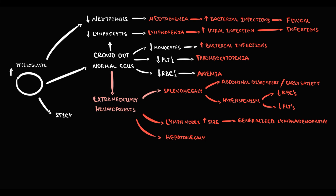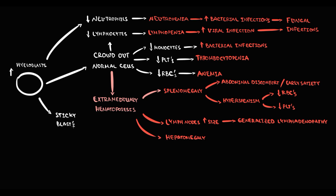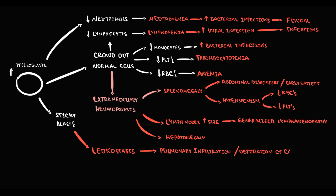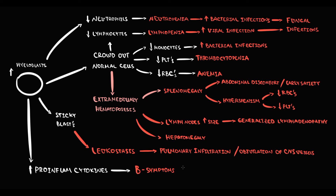A specific feature of myeloblasts is that they are sticky cells. In acute myeloid leukemia, these malignant cells stick to microvessels such as capillaries, and such a high quantity of pathological blood cells can cause obstruction of vessels — a condition called leukostasis. Most commonly, leukostasis results in pulmonary infiltration or obstruction of small vessels in the central nervous system. The large number of blast cells produces large amounts of pro-inflammatory cytokines, which can cause B symptoms such as fever and night sweats. Additionally, the huge amount of blood cells in the bone marrow exerts great pressure on bone tissue, sometimes manifesting as bone pain.